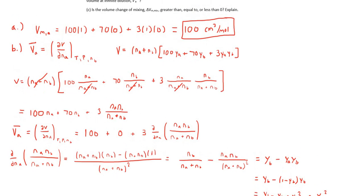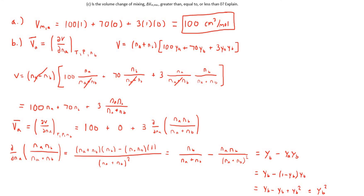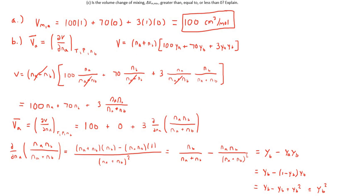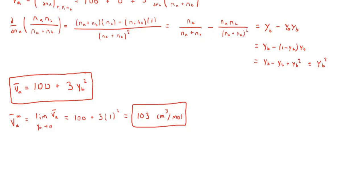The last part asks whether the volume change of mixing is greater than, equal to, or less than 0. To determine this, we compare the partial molar volume of A to the pure species molar volume of A. We found the pure species molar volume of A is 100 cm³/mol, and the partial molar volume of A is 100 plus 3YB squared. For any binary mixture, YB is between 0 and 1, so V̄A is always greater than 100, meaning the difference is always greater than 0. Therefore, the volume change of mixing is greater than 0.